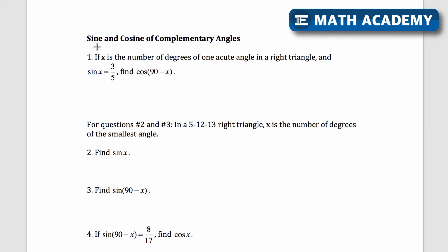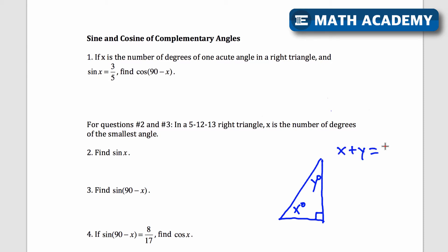Let's look at how to solve problems involving the sine and cosine of complementary angles for the SAT. Before we get started with these problems, I just want to show one thing: if this is x degrees right here, what would this other angle be compared to x if it's on a right triangle? Well, this angle plus this angle have to add up to 90 degrees. So let's just say that this is y degrees — x plus y equals 90.